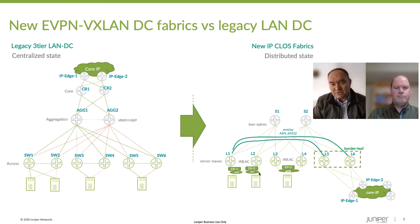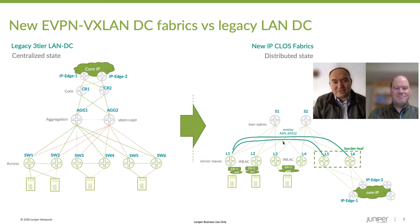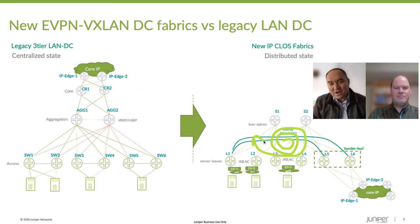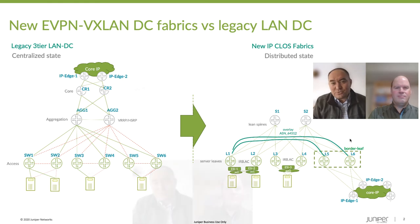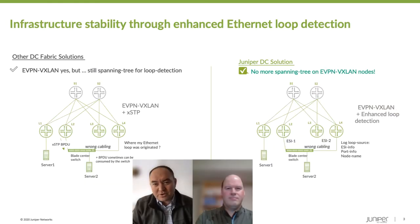But still, if the proximity team in the middle of the night by accident connects wrongly the cabling within the top-of-rack switch level, there is a little risk of creating an Ethernet loop within the EVPN and VXLAN. So that's why we wanted to address this problem, and we created a new approach for detecting these loops faster than BGP can do for the MAC duplicate detection.